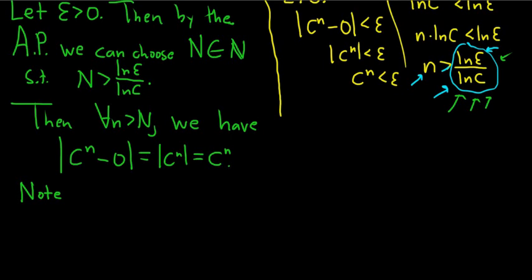Little n is bigger than capital N, which is bigger than the natural log of epsilon over the natural log of c. And what we're going to do, I suppose, is rewrite this, right? We need to solve this for c to the n, because we want to show c to the n is less than epsilon.